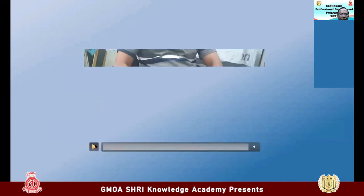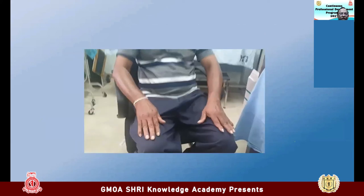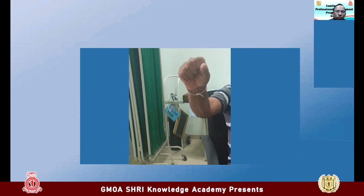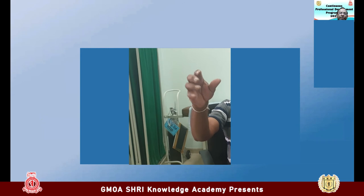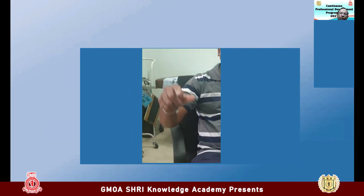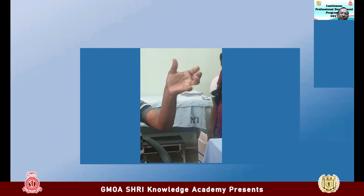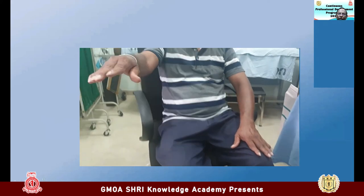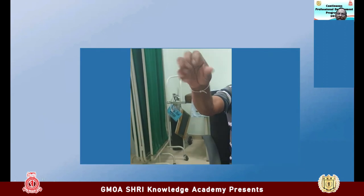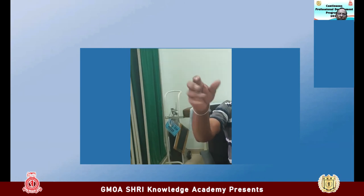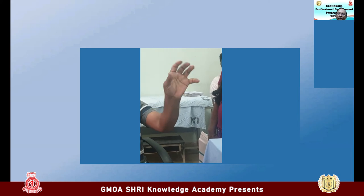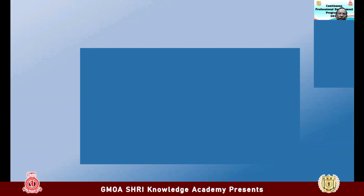Going back to the video shown at the start: the patient clearly has bradykinesia and asymmetric slowness on the right side. The patient does not have the characteristic tremor, but bradykinesia with asymmetry is sufficient for a diagnosis of idiopathic Parkinson's disease. This is a patient with early to mild idiopathic Parkinson's disease. If you now recognize this as Parkinson's after the talk, the educational objective has been fulfilled.